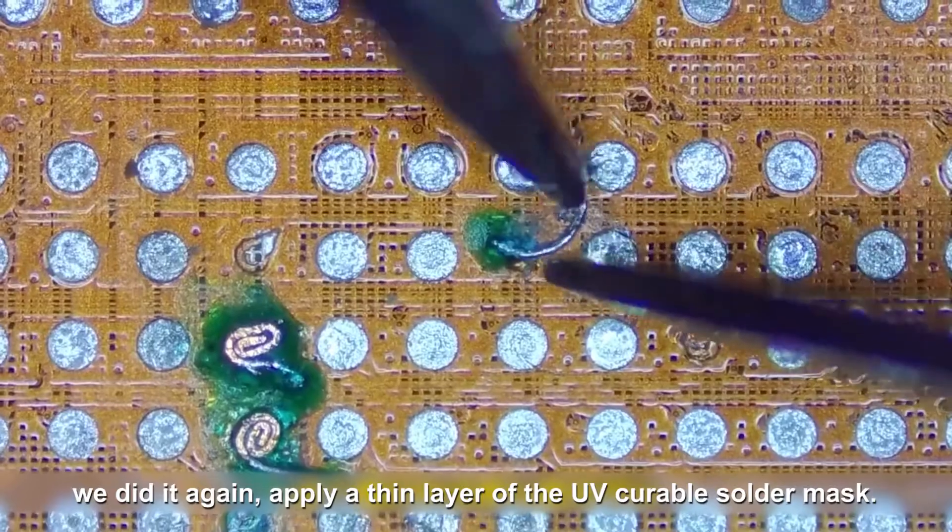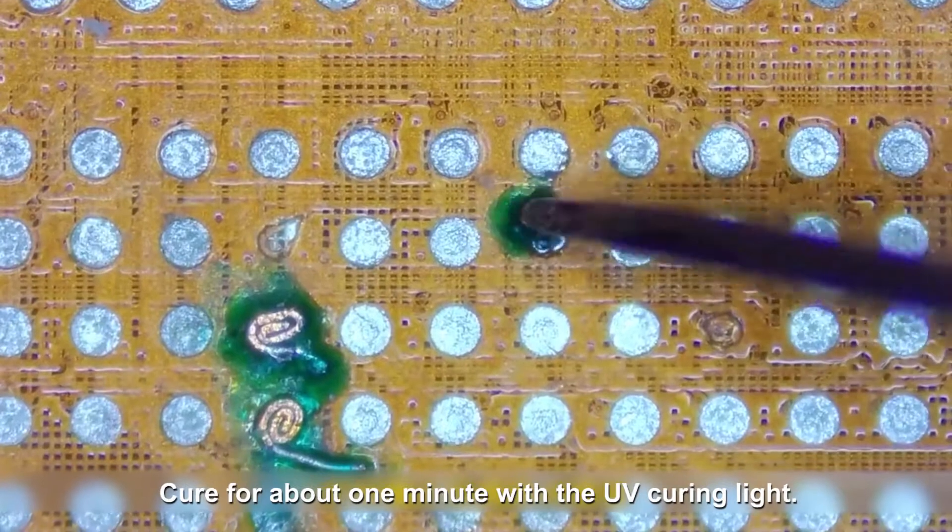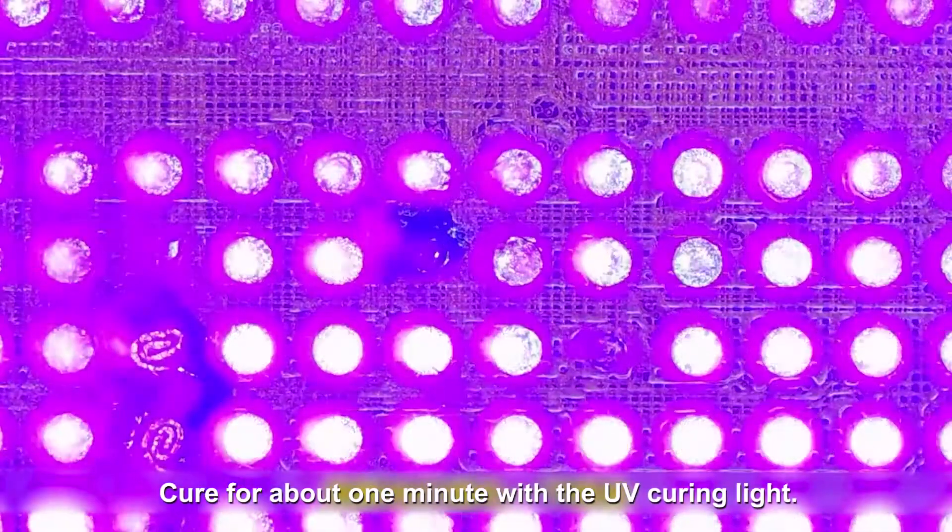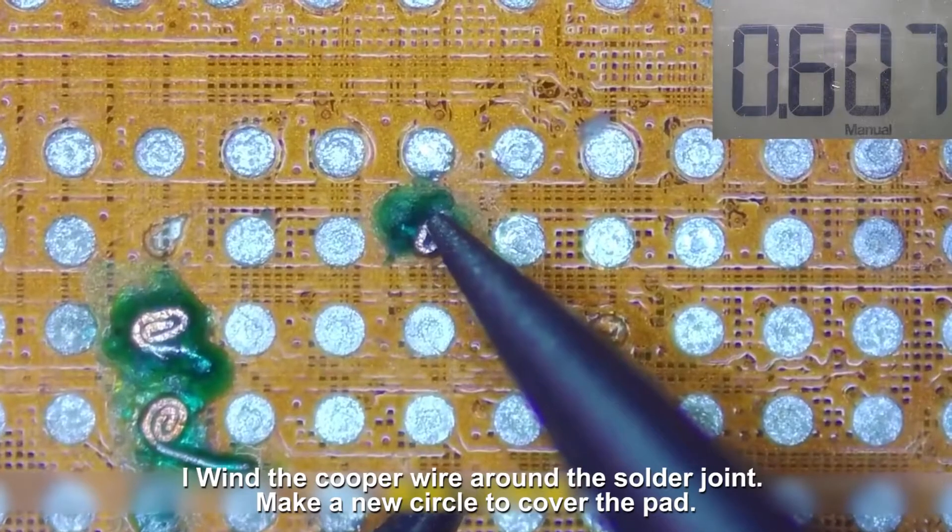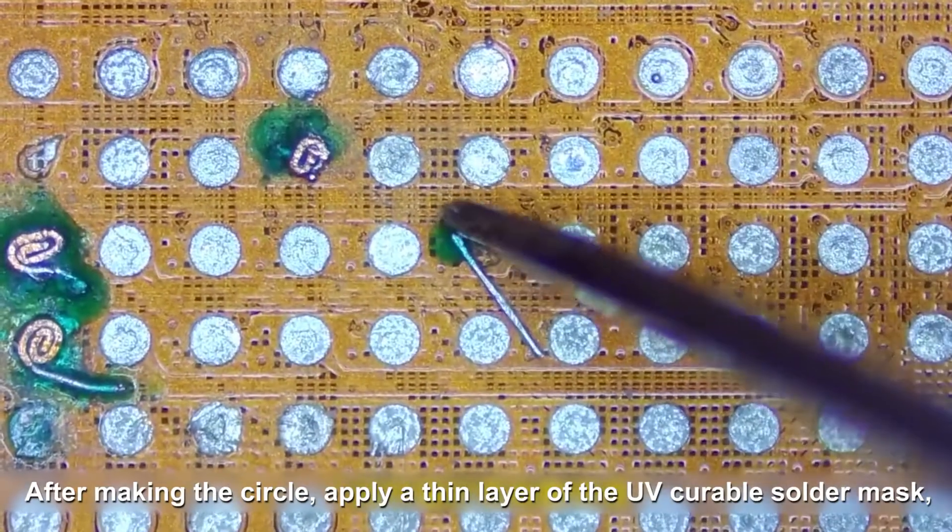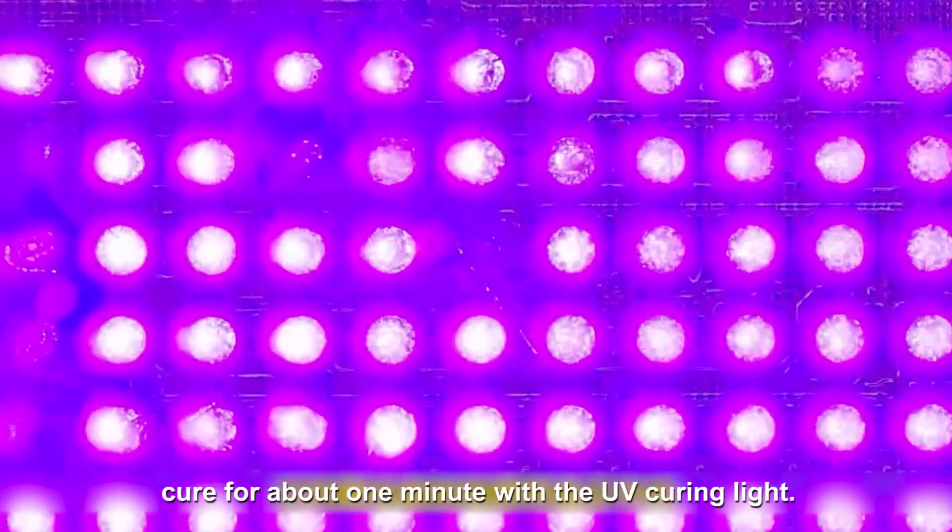We did it again. Apply a thin layer of the UV curable solder mask. Cure for about one minute with the UV curing light. Wind the copper wire around the solder joint. Make a new circle to cover the pad. After making the circle, apply a thin layer of the UV curable solder mask. Cure for about one minute with the UV curing light.